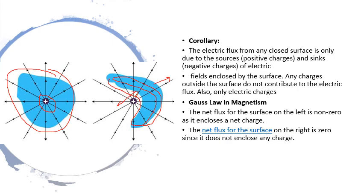We use this principle to explain Gauss law for magnetism also. In magnetism, the net flux for the surface on the left is non-zero as it encloses a net charge. In magnetism, no magnetic monopole exists, so whenever we calculate the magnetic flux, the flux from the south pole is equal to the flux from the north pole, giving exact flux of zero. That is why the divergence of B is always zero.